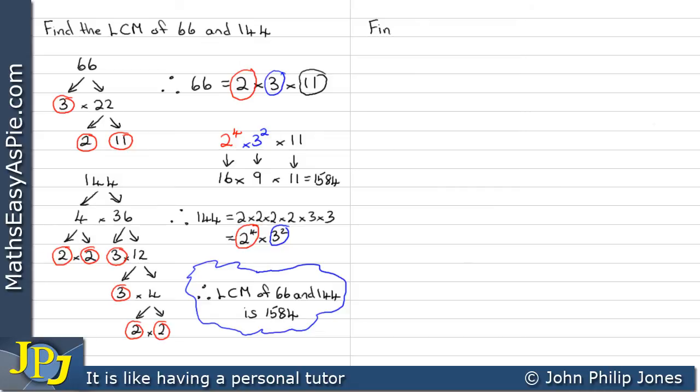Let's look at another example. Let's find the lowest common multiple of 6 and 15. We take the 6, and we can see that that can be made out of 2 times 3.